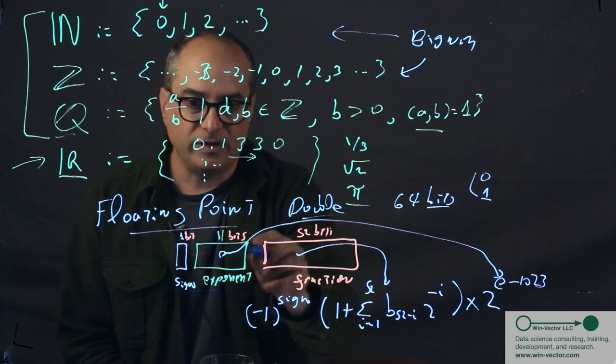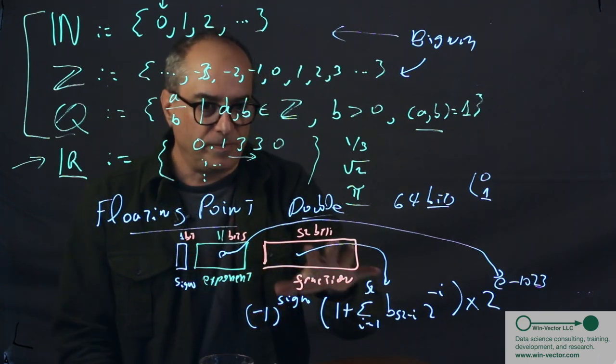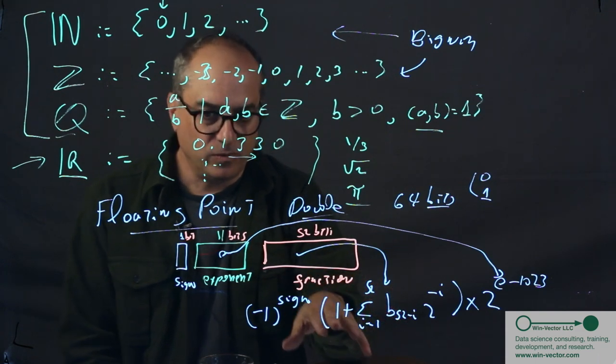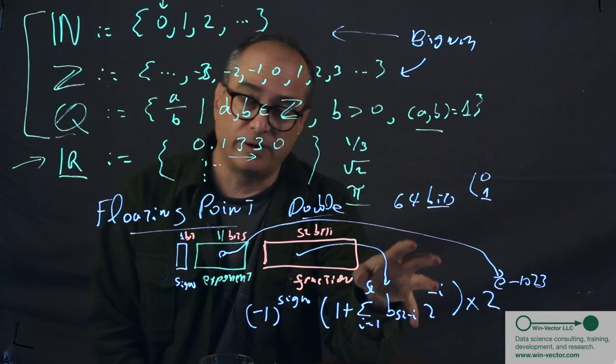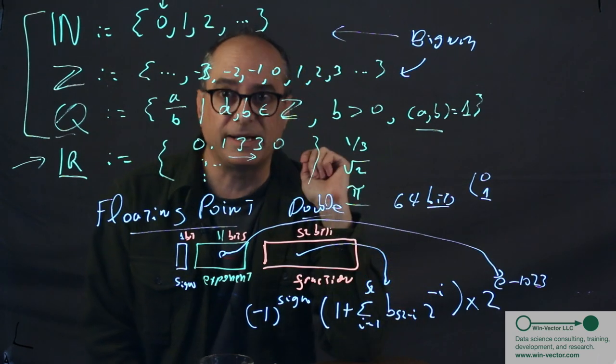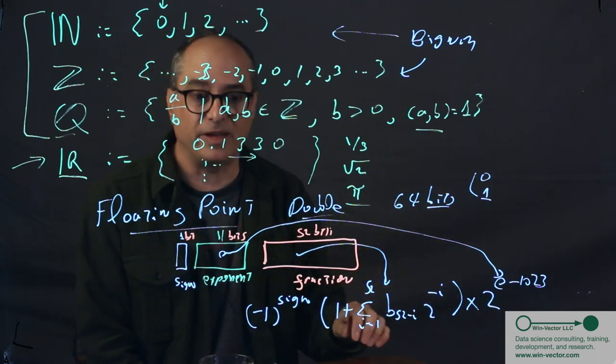So again, this is when this exponent is not one of its special symbols of all zeros or all ones. So to represent zero, we set the exponent to all zero and we don't get this. So zero is also a special form for floating point. You can have plus and minus zero. It actually still has a sign. So this is how all non-zero floating point numbers are represented.